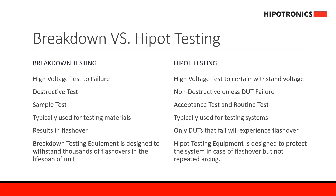Breakdown testing versus high-volt testing: for breakdown testing, the high-voltage test is done to failure. It's usually a destructive test, and therefore it's only done as a sample test. It's usually used for testing insulating materials, and the test will always result in a flash-over, since that's the goal of the test. With this in mind, the breakdown testing equipment is usually designed to withstand thousands of flash-overs in the lifespan of the unit.